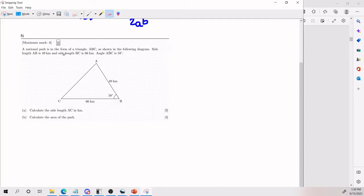So we have a national park which is in the form of the triangle ABC, as shown in the following diagram. We have the side length AB, which is this guy here, side length BC, which is this guy here, and angle ABC, which is this guy here. So that's all the info they give us.